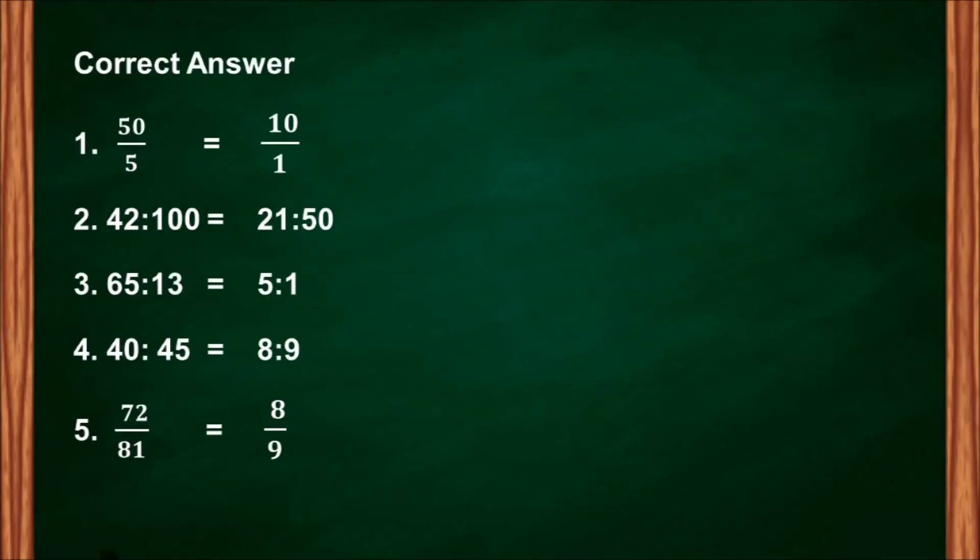For number one, 50 is to 5, the simplest form is 10 is to 1. 42 to 100, so that will be 21 to 50. 65 to 13, that will be 5 is to 1. 40 to 45 is equal to 8 is to 9.